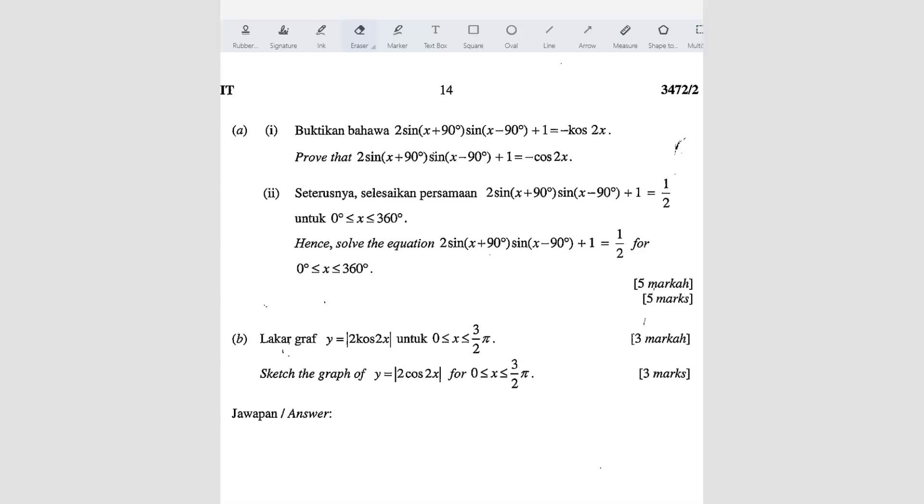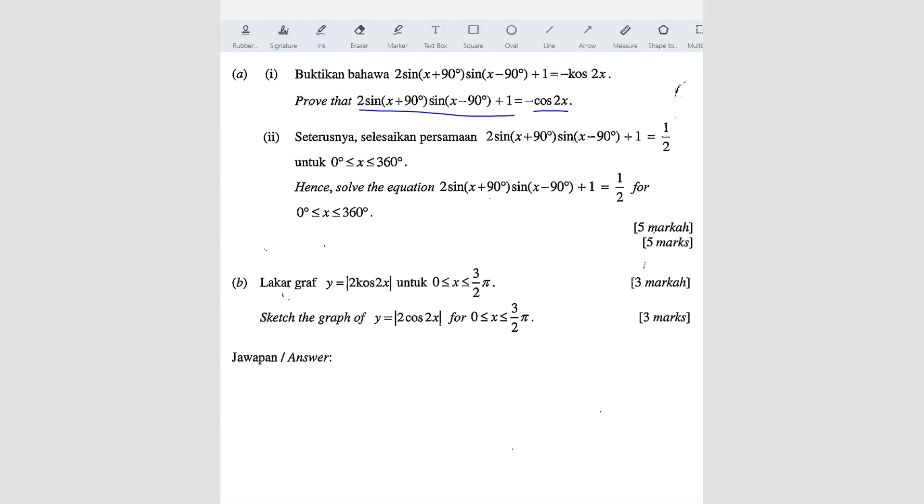Question number 6. They want you to prove that this is equal to this. So we're going to do that. We start from the left hand side. So left hand side, we have 2sin(x + 90°) and then sin(x - 90°).